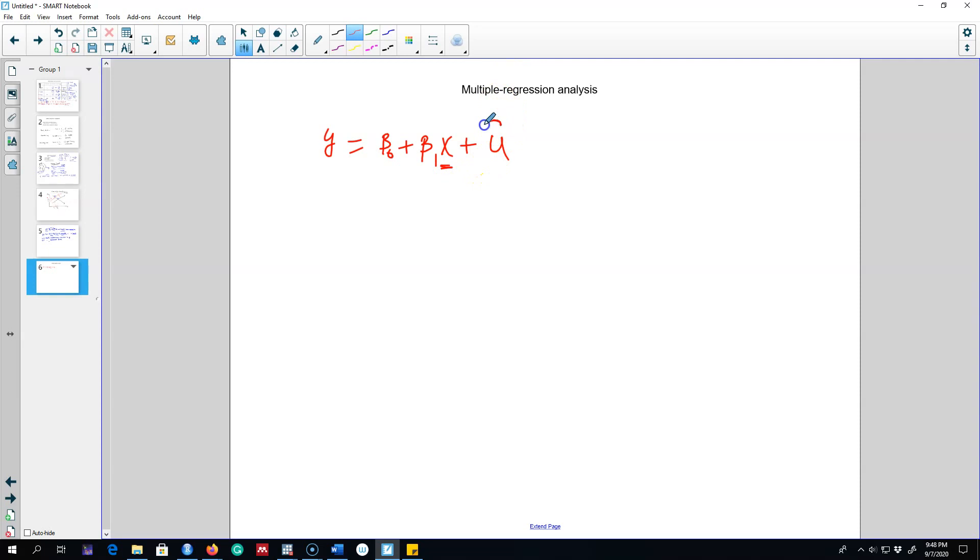One crucial assumption that we made about this error term was that the error term is uncorrelated with our x variable. There was another one as well which was the expected value of this error term is zero. So that was the case of a simple linear regression model.